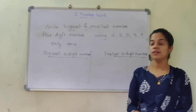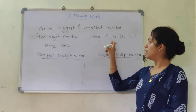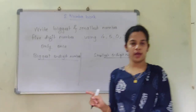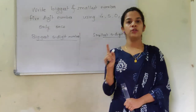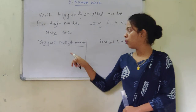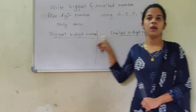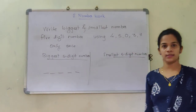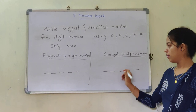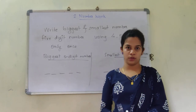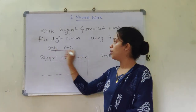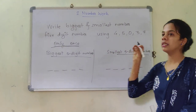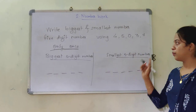Write the biggest and the smallest 5-digit number using the digits 4, 5, 0, 3, and 7 — each only once. You are going to use these 5 digits only one time and form a 5-digit number. One way, you will form the biggest 5-digit number, and another way, you will form the smallest 5-digit number. So we are going to fill 5 places — that is for sure.